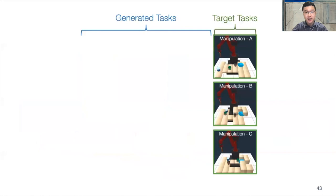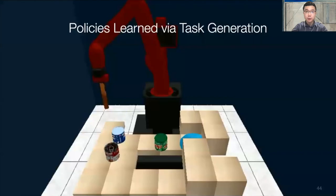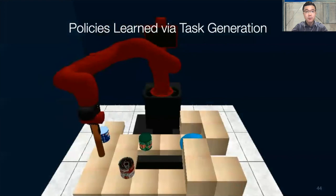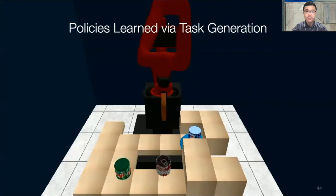Here is an example of the progression of generated tasks given the target task. At the beginning of training, the table surface is mostly flat. As the policy learns to solve easy scenarios, the table surface starts to morph by forming a bridge and slot as in the target task. The goal starts with a large radius which makes it easy to reach, then gradually shrinks as the success condition becomes more rigorous. The number and arrangement of obstacles also change over time based on how well the policy solves the current tasks.